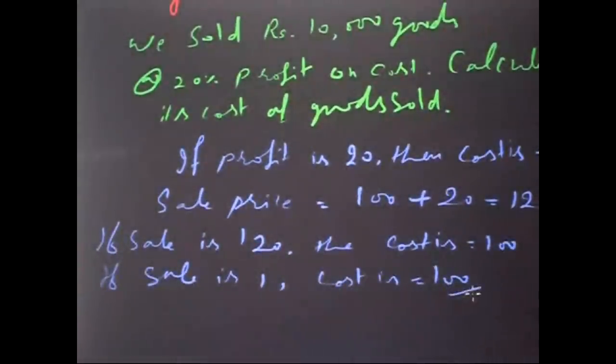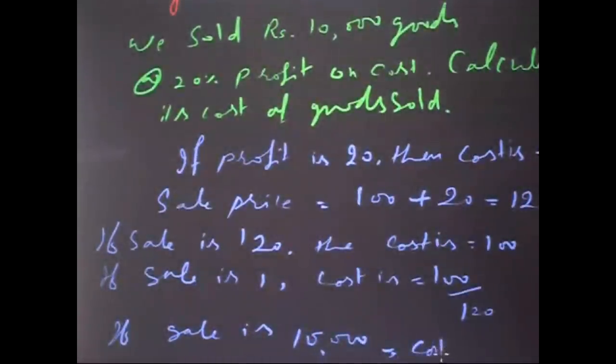100 divided by 120. If sale is 10,000, then cost will be 100 divided by 120 times 10,000.